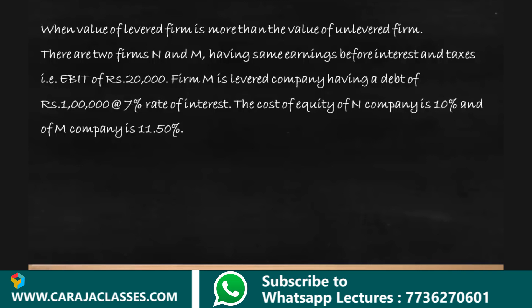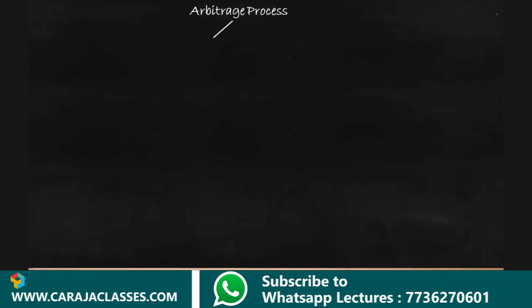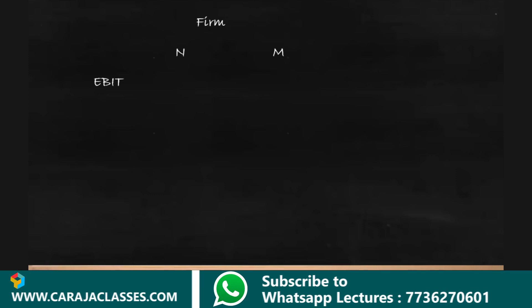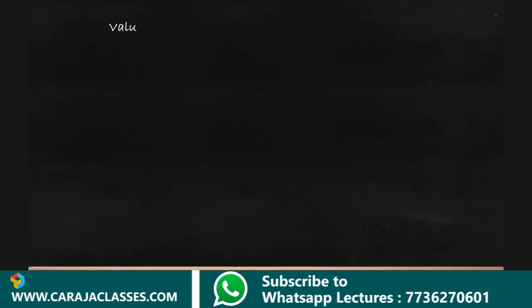There are two firms, N and M, both having earnings before interest and tax (EBIT) of rupees 20,000. Firm M is a levered company with debt of rupees 1 lakh at 7% interest. The cost of equity for firm N is 10% and for firm M is 11.5%. Firm N is unlevered and firm M is the levered firm. Cost of debt applies only to firm M at 7%.